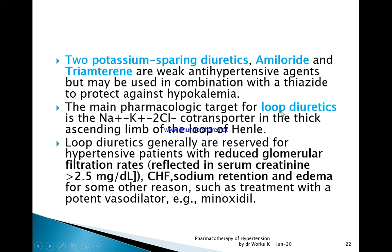The main pharmacological target of loop diuretics — the most potent diuretics — is the sodium-potassium-two-chloride co-transporter in the thick ascending limb of the loop of Henle. Loop diuretics are generally reserved for hypertensive patients with reduced glomerular filtration rate reflected by serum creatinine greater than 2.5 mg/dL, for patients with congestive heart failure, or for patients with sodium retention and edema from drugs like minoxidil.